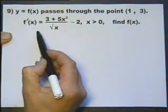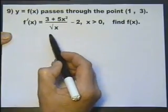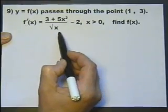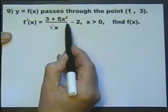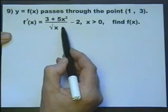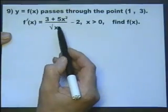So, if this is f dash of x, in other words the original function differentiated, to get the original function I need to integrate this. I need to get this back to where it was, I need to integrate it.